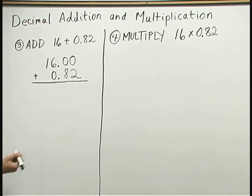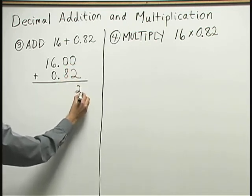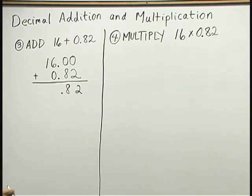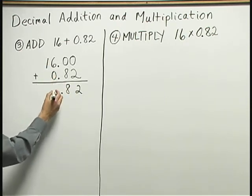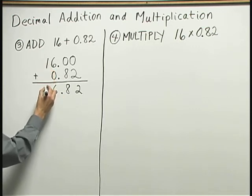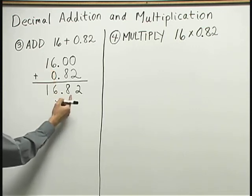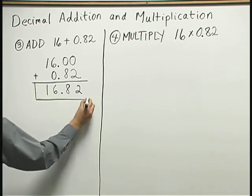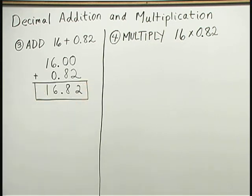And now, when I add, I just have 0 plus 2 is 2. 0 plus 8 is 8 point. 6 plus 0 is 6. And bring down the 1. I have 16.82. And that's my result to the addition. This addition problem is a lot like adding 16 dollars plus 82 cents. You could think of our result as 16 dollars and 82 cents.